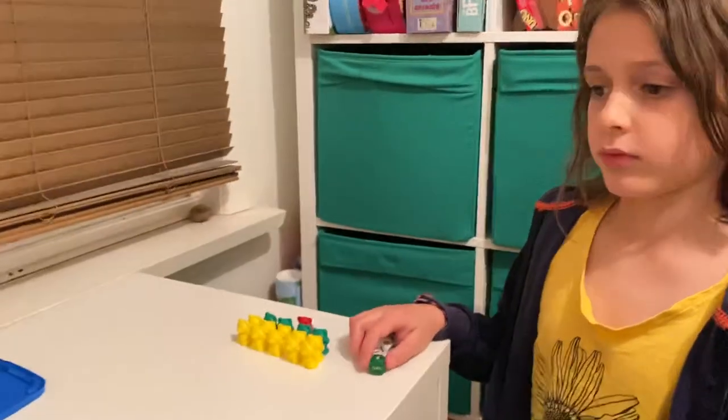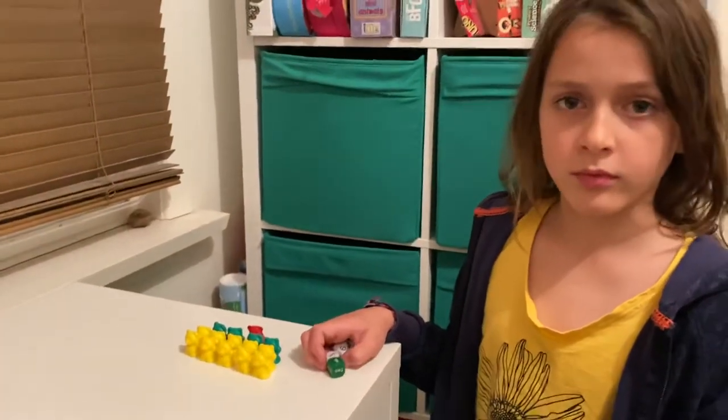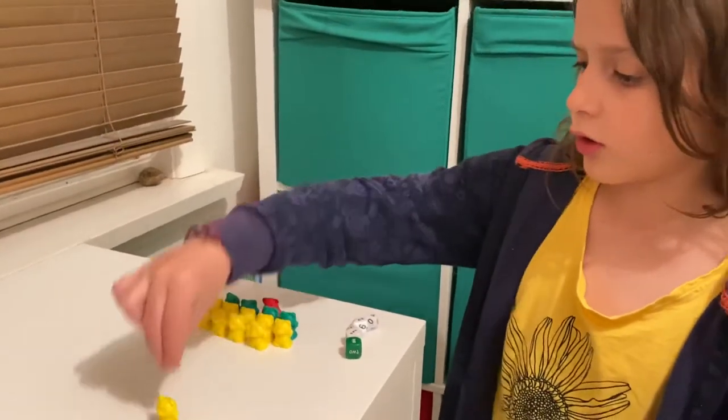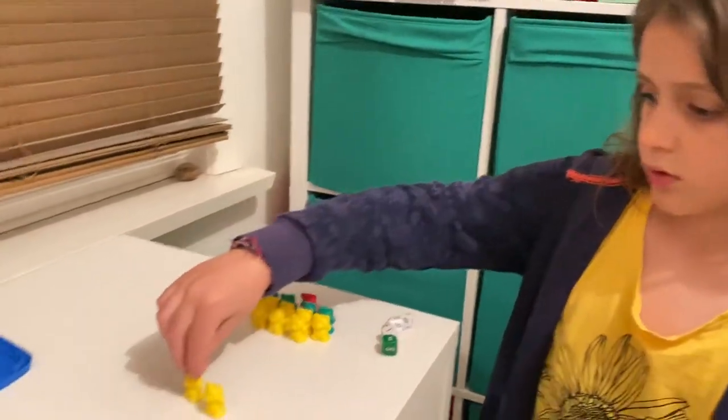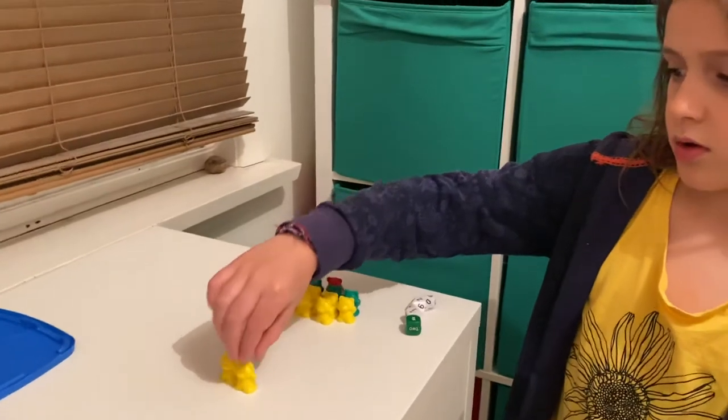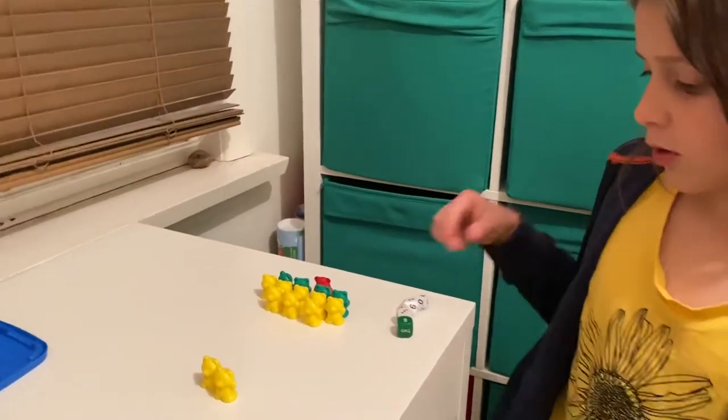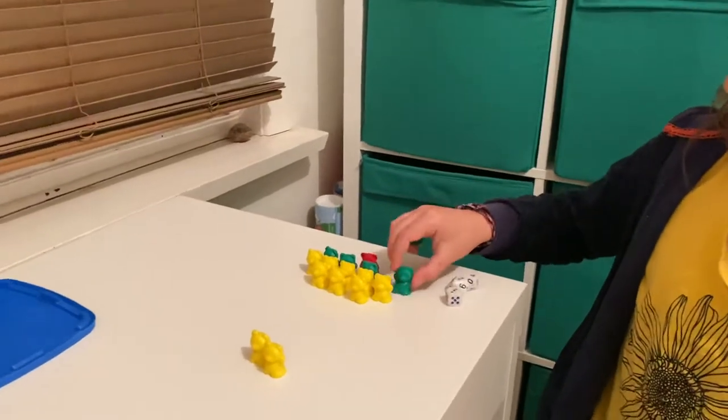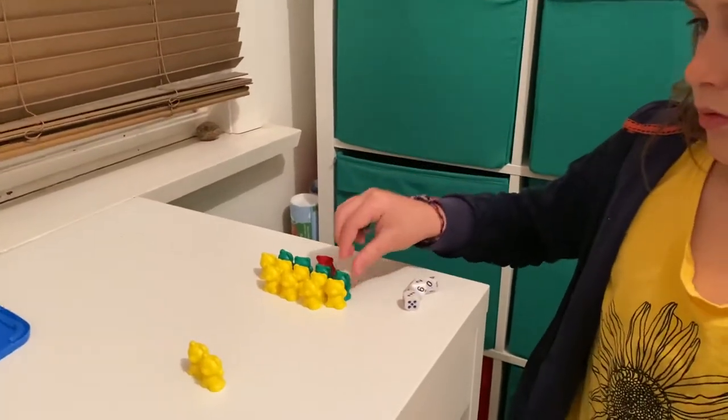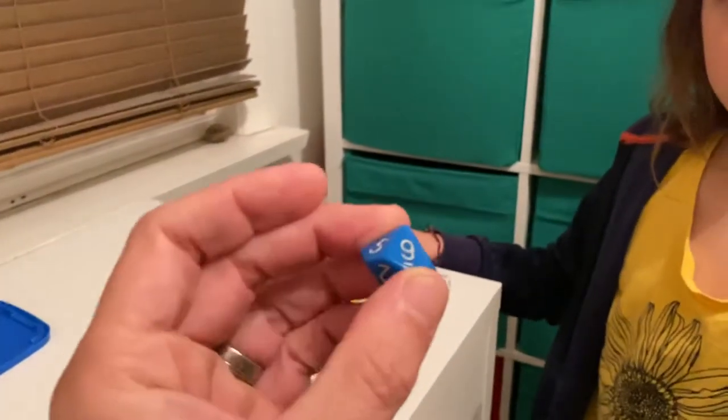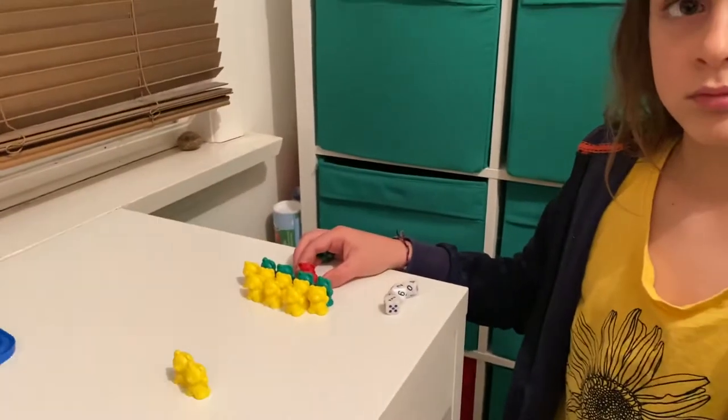So on each play one person attacks and one person defends. You can either choose to attack with one or two of your people. The yellows roll a six sided dice, that's their strength. And the greens, of which we only have four, roll a ten sided dice. But actually the dice we're using is zero to nine. So we're actually just calling it a zero to nine dice, which just changes the odds slightly.